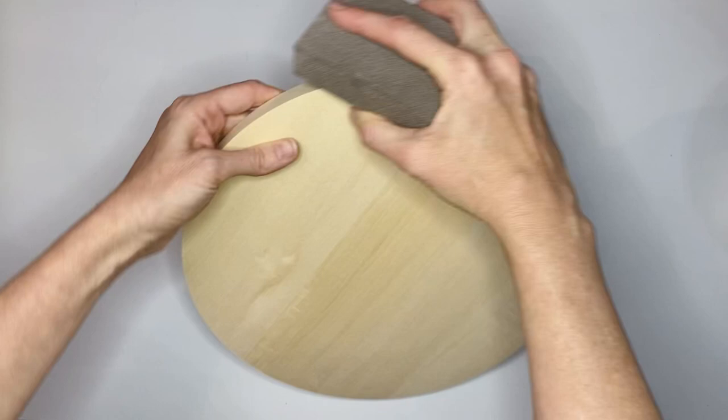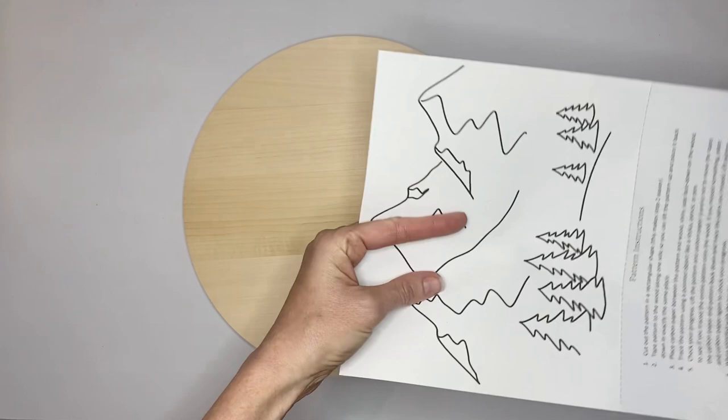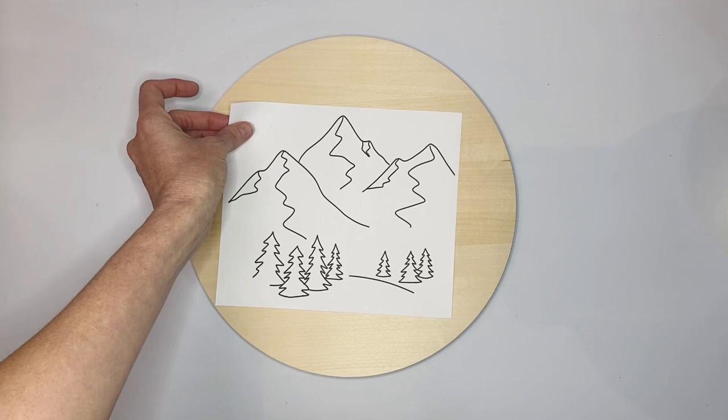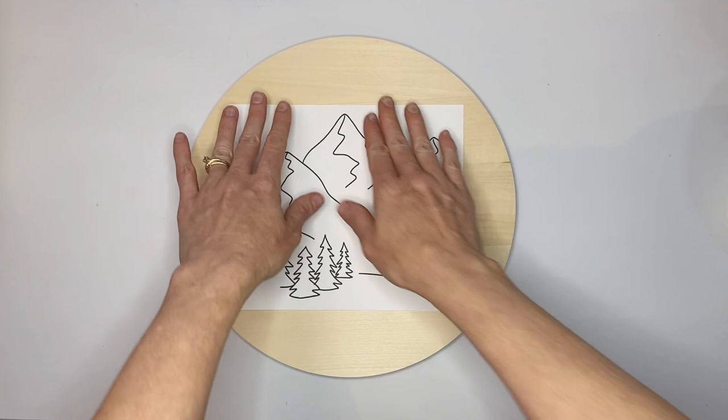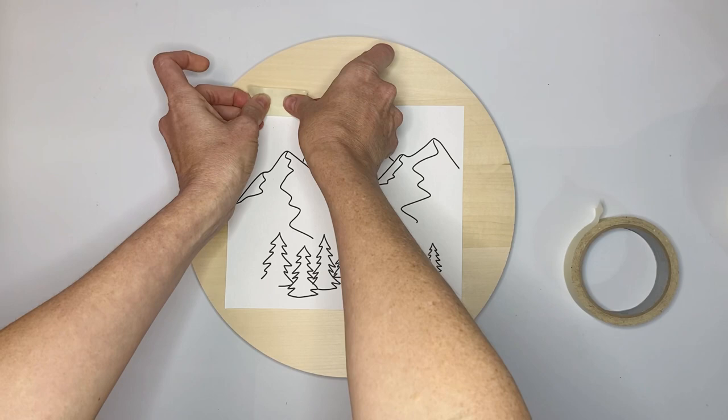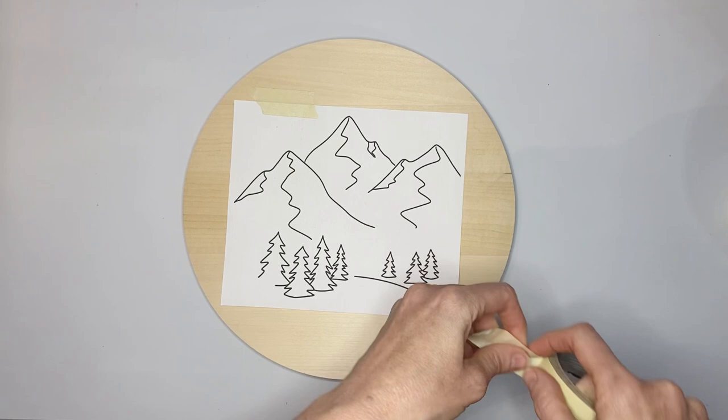Next it's time to trim your pattern to the right size. Make sure that when you trim your pattern that you are trimming it so that you can have space at the top to tape it down.